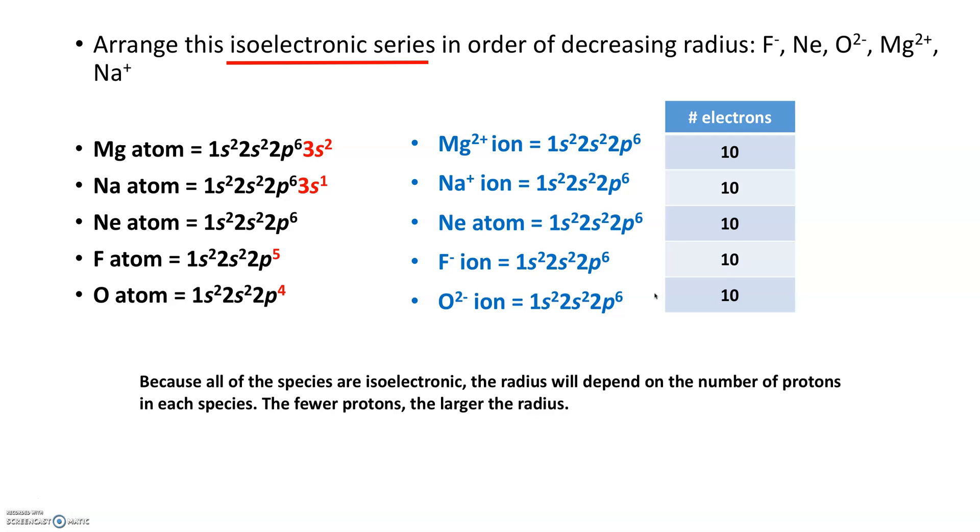Now because all these species are isoelectronic and they all have the same number of electrons, we're going to use the number of protons to determine the size. If I have fewer protons, I'm going to have a bigger radius because less protons pulling on the same amount of electrons won't be as efficient. There'll be an expansion.